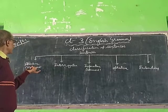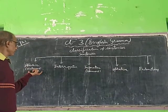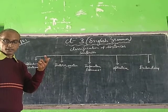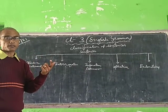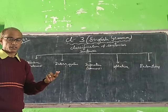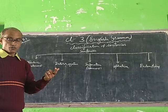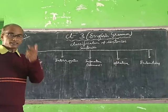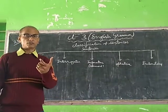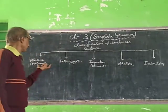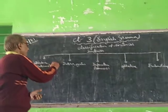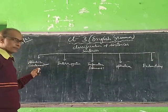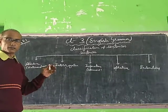What is assertive? Assertive is a statement. For example: 'He is a boy,' 'I am a girl.' So this is assertive — it says something, states something. You can say an assertive sentence is a statement.